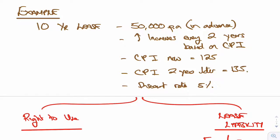Right, let's have a look at an example then. So we've got a 10-year lease, 50,000 per annum in advance. It increases every two years based on CPI, the Consumer Price Index. So that's a variable payment based on a rate.